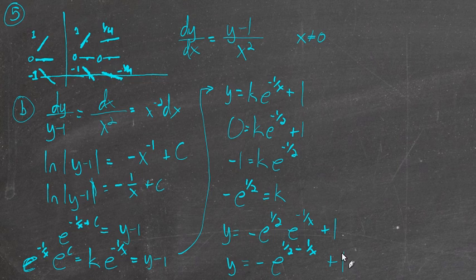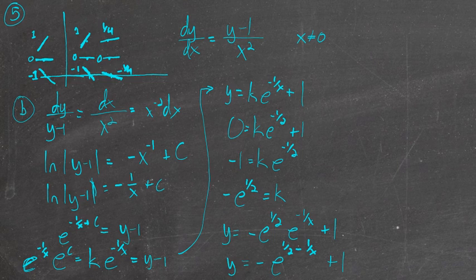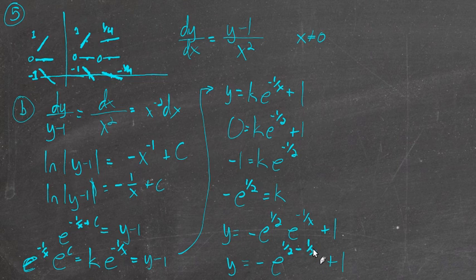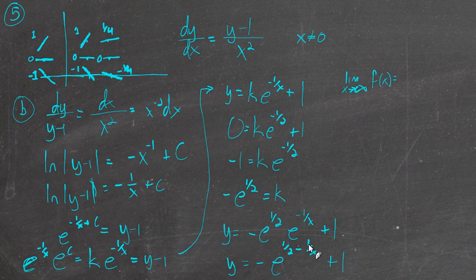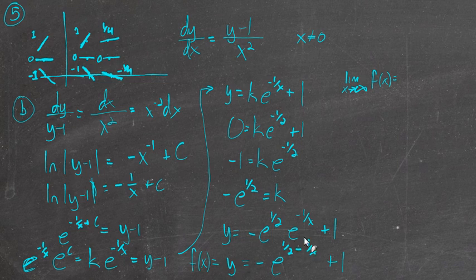For the particular solution described in part B, find the limit as x approaches infinity. As x approaches infinity, 1 over a big number is going to pretty much be 0. So as x gets larger, 1/x approaches 0, which means the exponent approaches 1 half. So the limit as x approaches infinity of f(x) gives us 1 minus e to the 1 half, or 1 minus the square root of e.